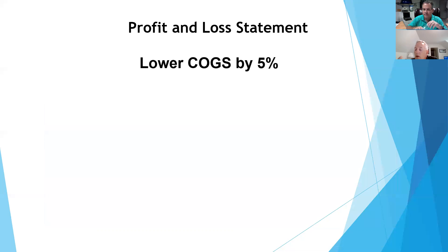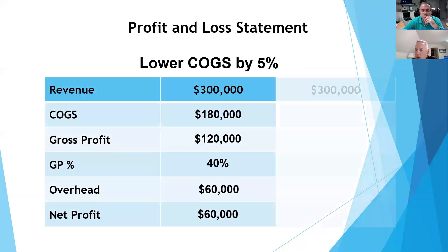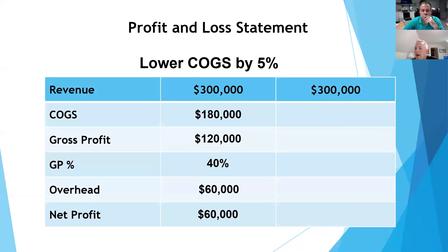Now this is interesting. The second of those three numbers was cost of goods sold or variable costs. What if we lowered our cost of goods sold by 5%? Remember, those are the variable costs: commissions, materials, supplies.